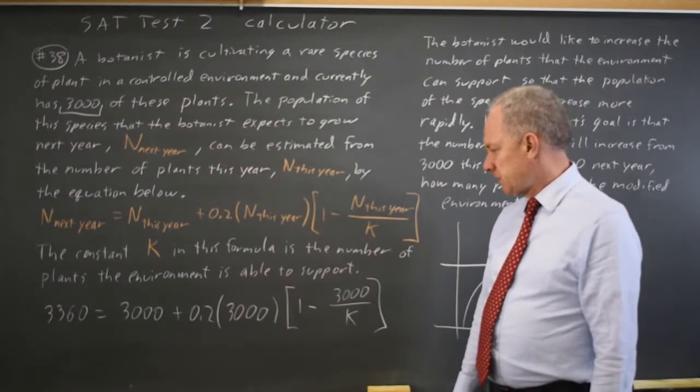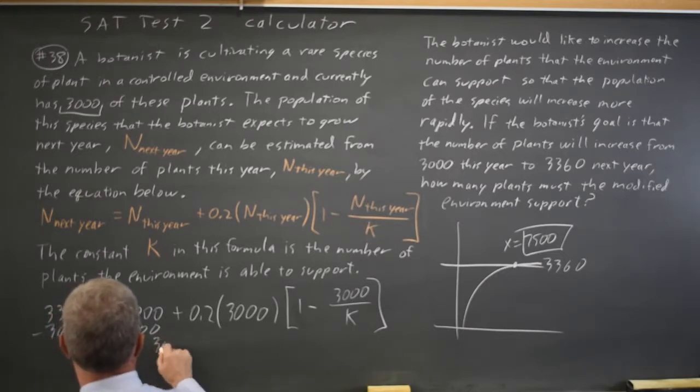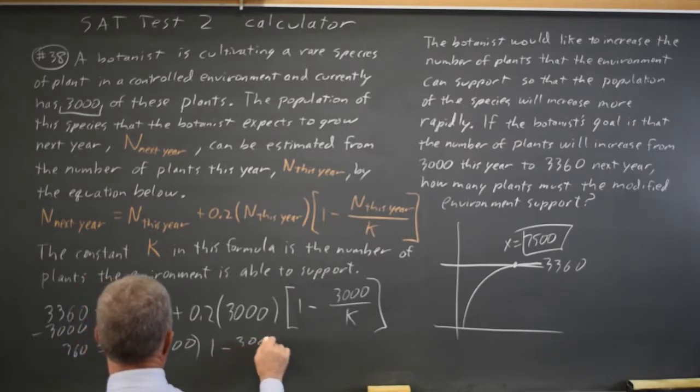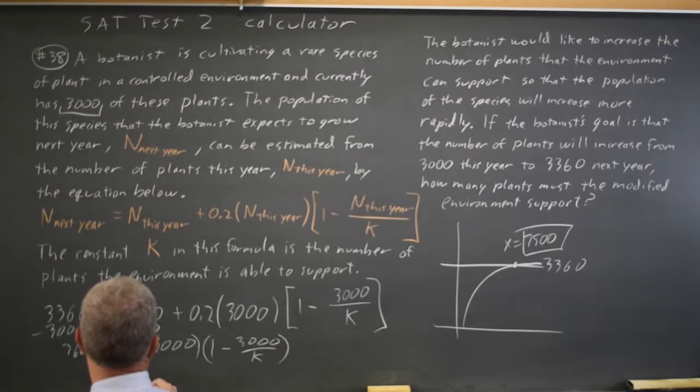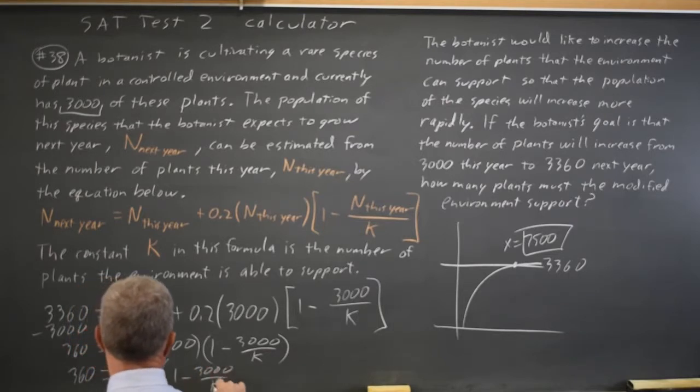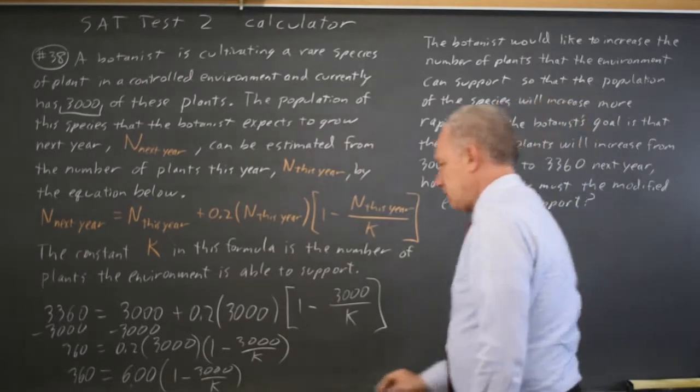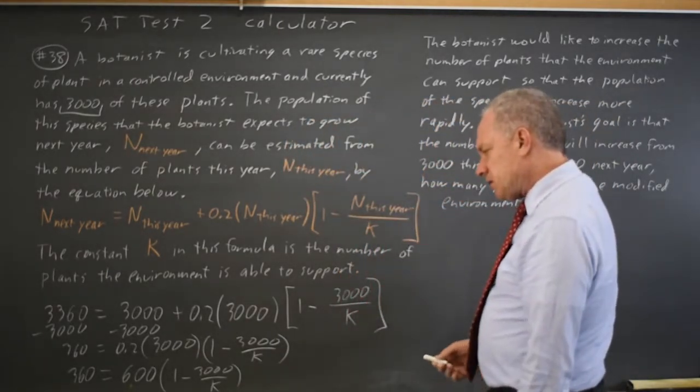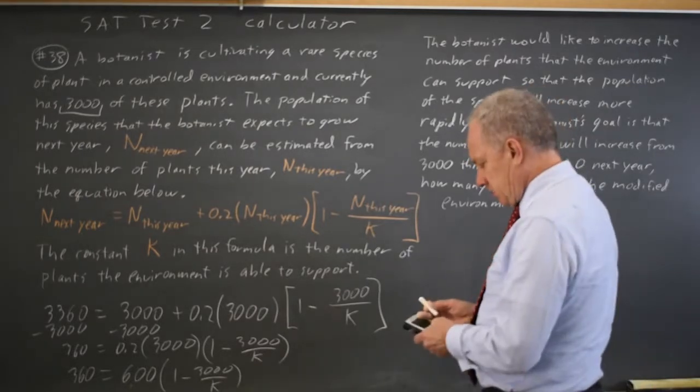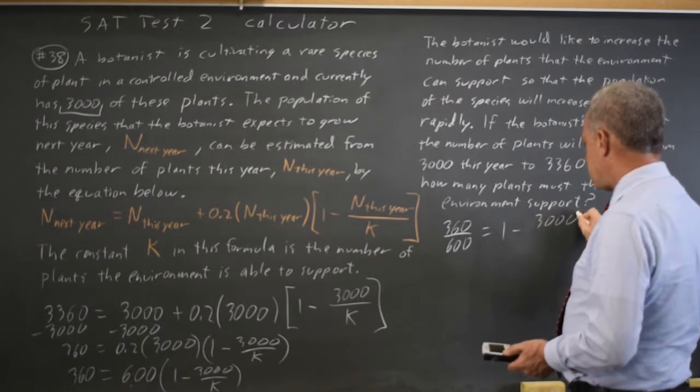And if I did this algebraically, let's do it. Subtract 3,000 from both sides. I get 360 equals 0.2 times 3,000 times 1 minus 3,000 over K. So 360 equals 600, 1 minus 3,000 over K. Erase my previous work. Hopefully I'll have space. And dividing both sides by 600, I get 360 over 600 equals 1 minus 3,000 over K.